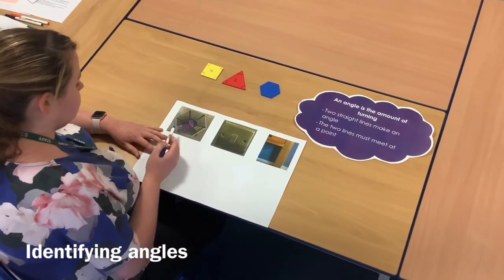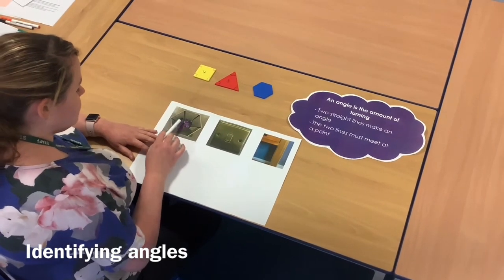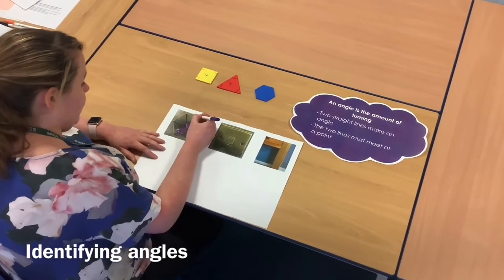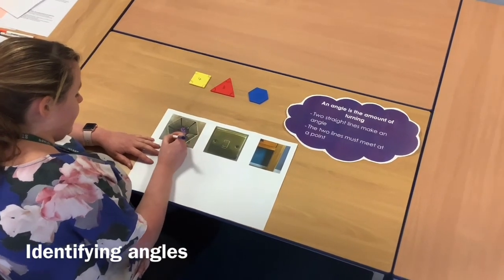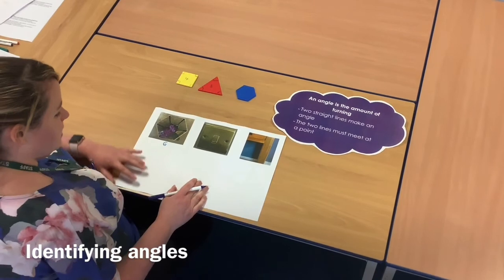So here, I've got an orchid vase. And once again, it's a hexagon shape. And I can identify the angles again. So once again, there are six angles.